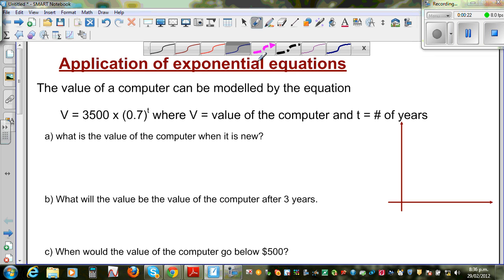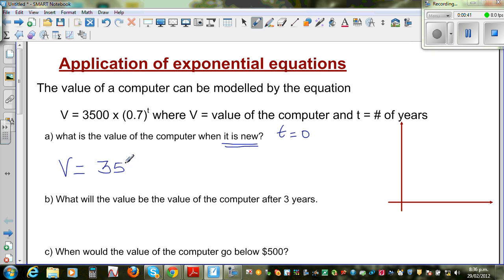The first question is, what's the value of the computer when it is new? When it is new means t is 0. I'm going to put t = 0 in this equation. So the value of the computer when it is new would be 3500 times 0.7 raised to 0. Now 0.7 raised to 0, any number raised to 0 is 1.